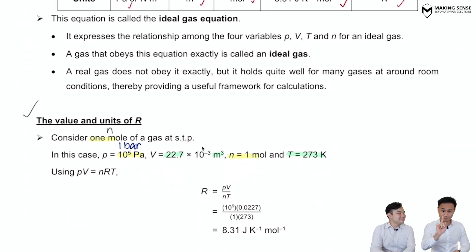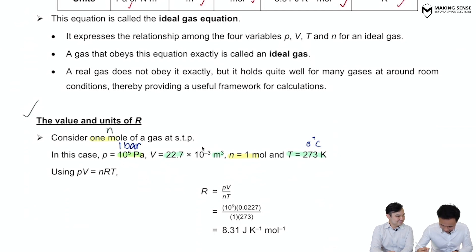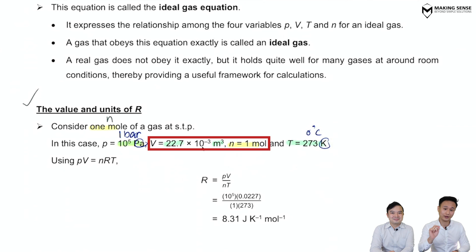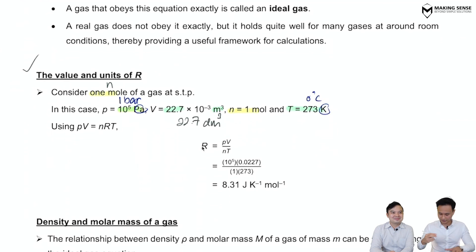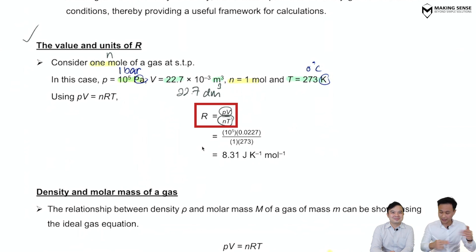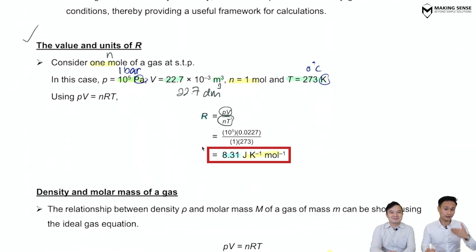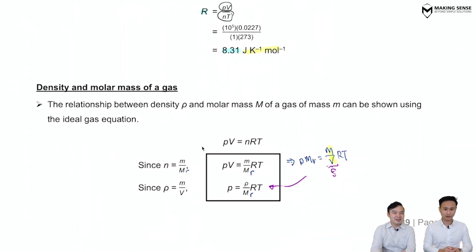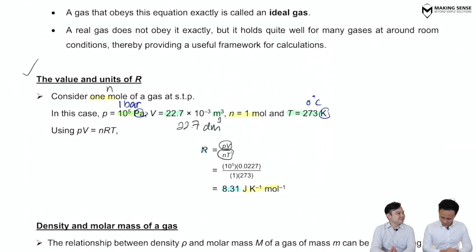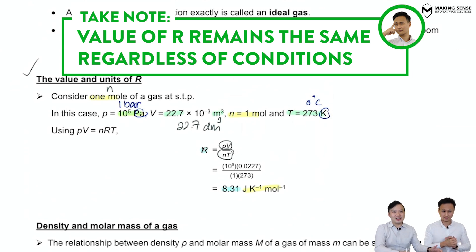To derive the units of R, assume 1 mole of gas at standard temperature and pressure: 1 bar = 10⁵ pascals, 0°C = 273 K, and volume at STP is 22.7 dm³ = 22.7 × 10⁻³ m³. Plugging everything into PV = nRT gives R = 8.31 J K⁻¹ mol⁻¹. The units are joules per kelvin per mole. R is constant regardless of conditions — it works for RTP as well and always gives the same constant.